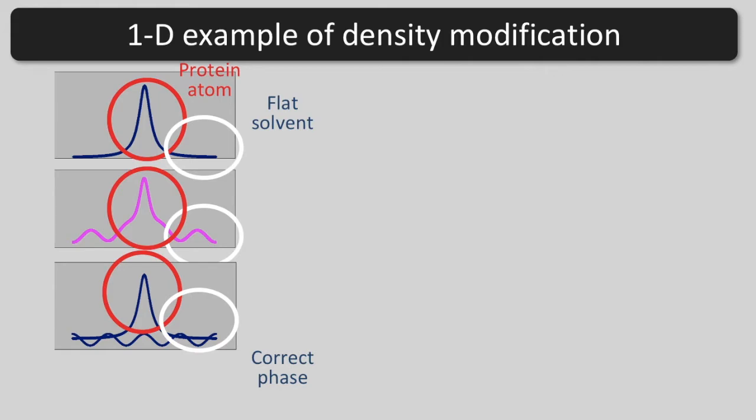If we add the Fourier term back in with the wrong phase, the solvent region becomes even more rippled. Now comparing the maps with the two possible phases, and only looking in the region of the solvent, it is obvious which is correct.